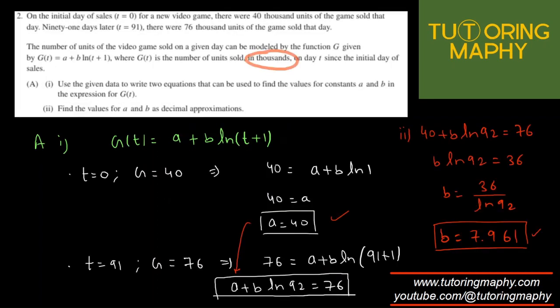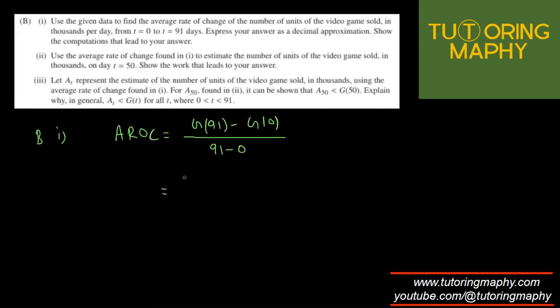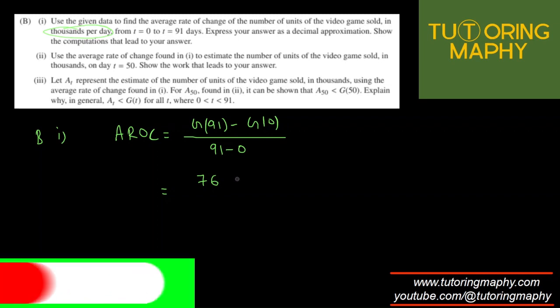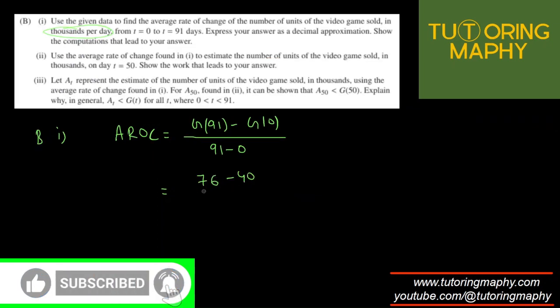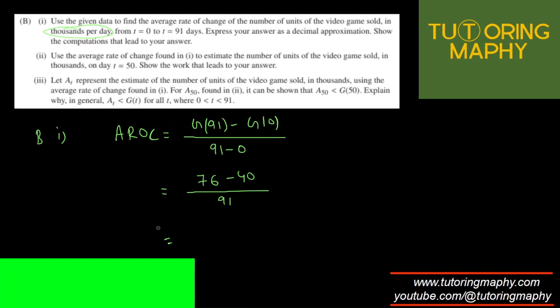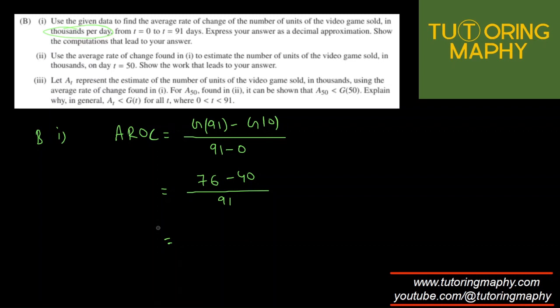We already have the values, right? G of 91 is 76. Don't put 76 thousands because they need the unit in thousands per day. So don't put 76 thousands, it's just 76. And G0 was 40. So I'm going to put 40 here. And this is 91 minus 0, which is just 91. So that's going to be 36 over 91, which is going to come out as 0.396 up to 3 decimal places. So that's going to be AROC. It's pretty straightforward.